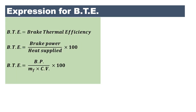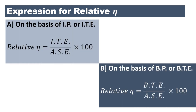Brake thermal efficiency is defined as the ratio of brake power to the heat supplied: BTE = BP / (mf × CV) × 100.